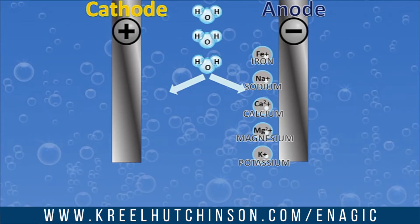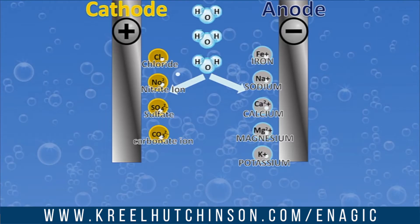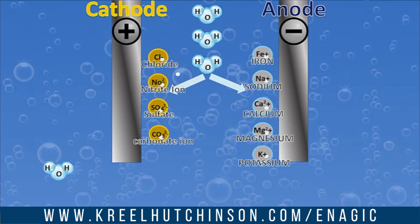Those positive minerals go directly to the minus side, because positives and minuses attract each other. On the other side we have the negatively charged, acidic minerals. The ones on the right — iron, sodium, calcium, magnesium, potassium — these are your electrolyte minerals, the minerals you need for health and well-being. Your body is not being voided of them like with reverse osmosis or distilled water.